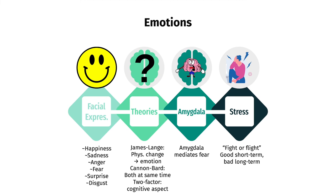Yet another emotional behavior we experience is stress, which is often elicited by our fight-or-flight response as we interpret a situation as dangerous, and our body releases hormones such as adrenaline which increases attention, heart rate, and breathing rate, readying us for action. Stress is often useful in the short term, but long-term stress can compromise our immune system by suppressing the production of antibodies, making us more susceptible to sickness.